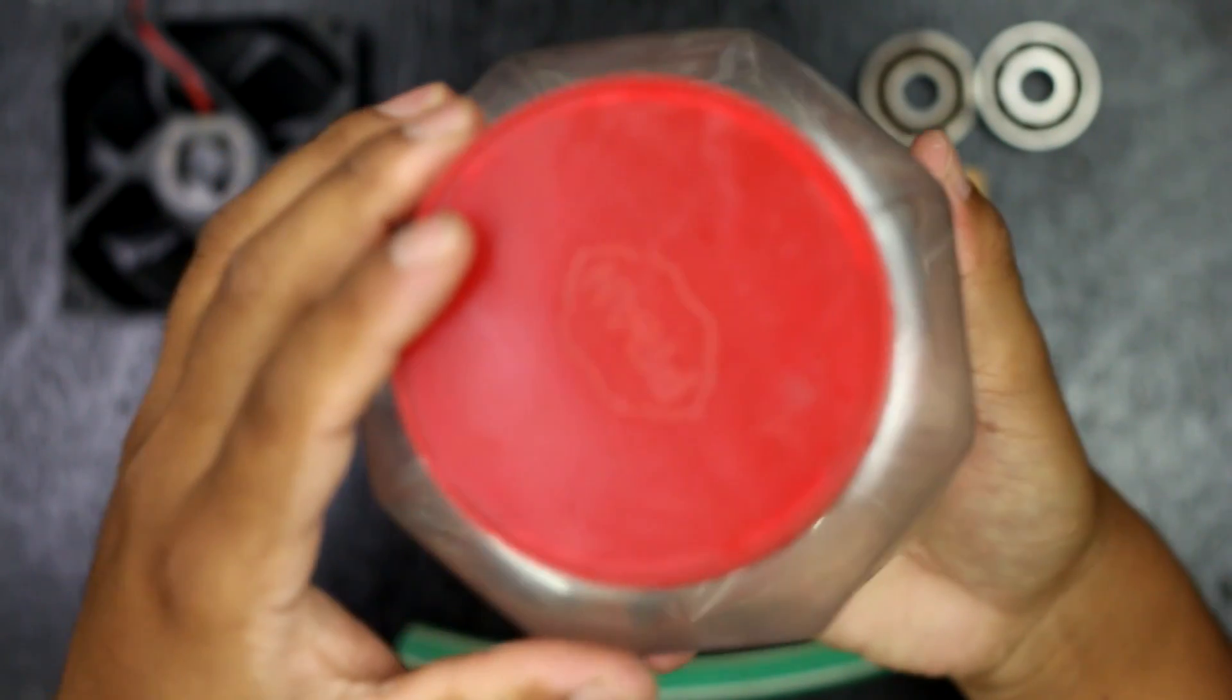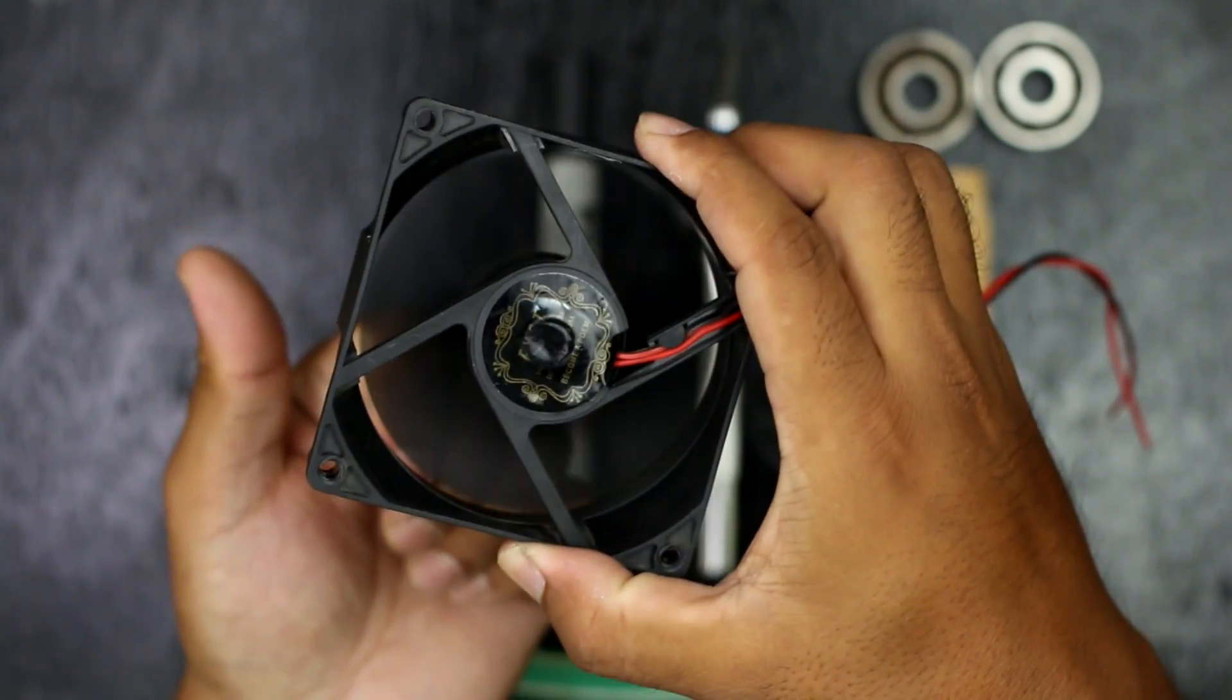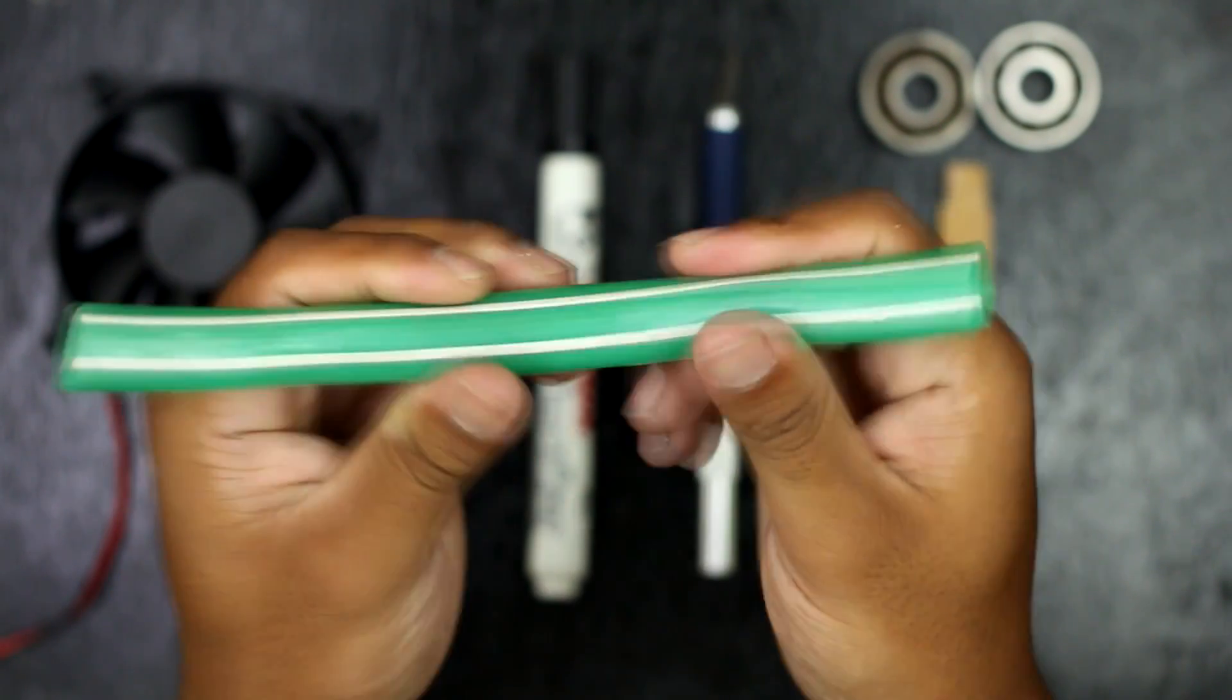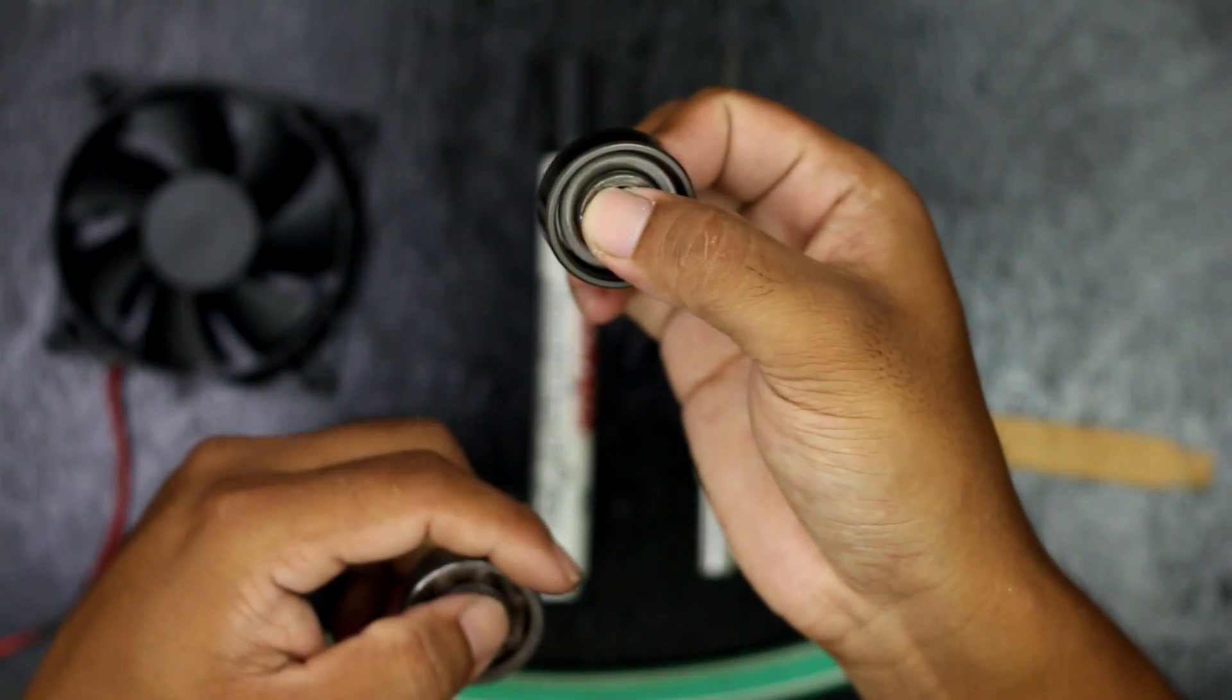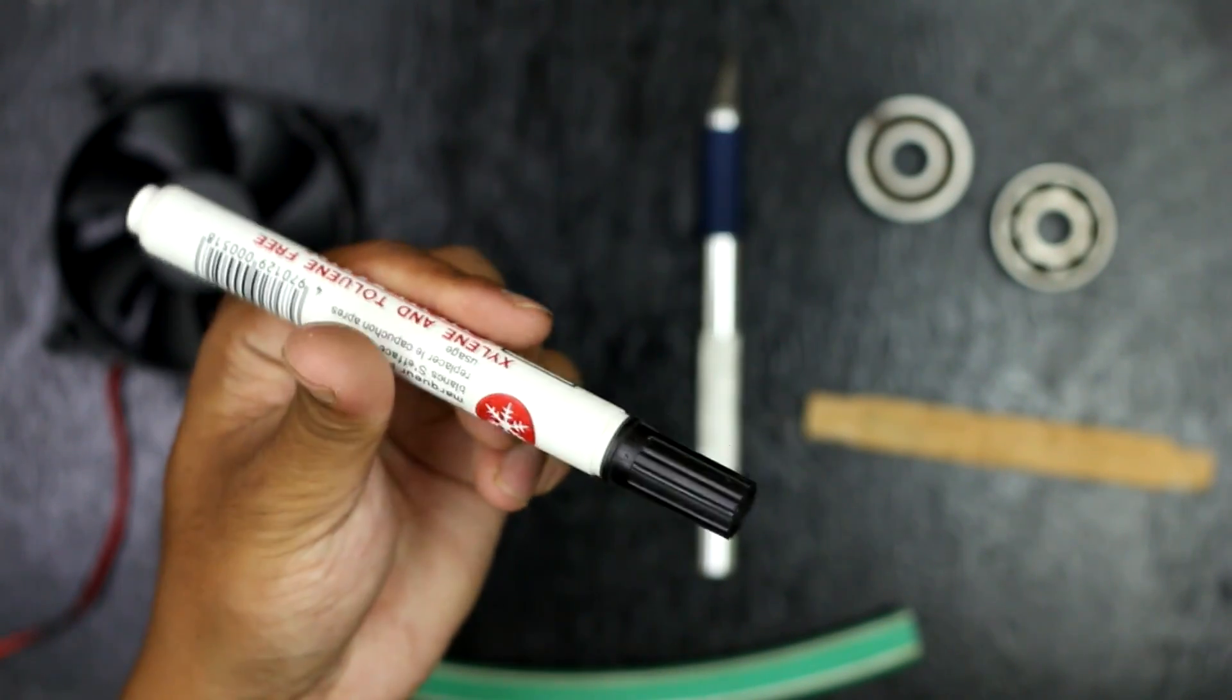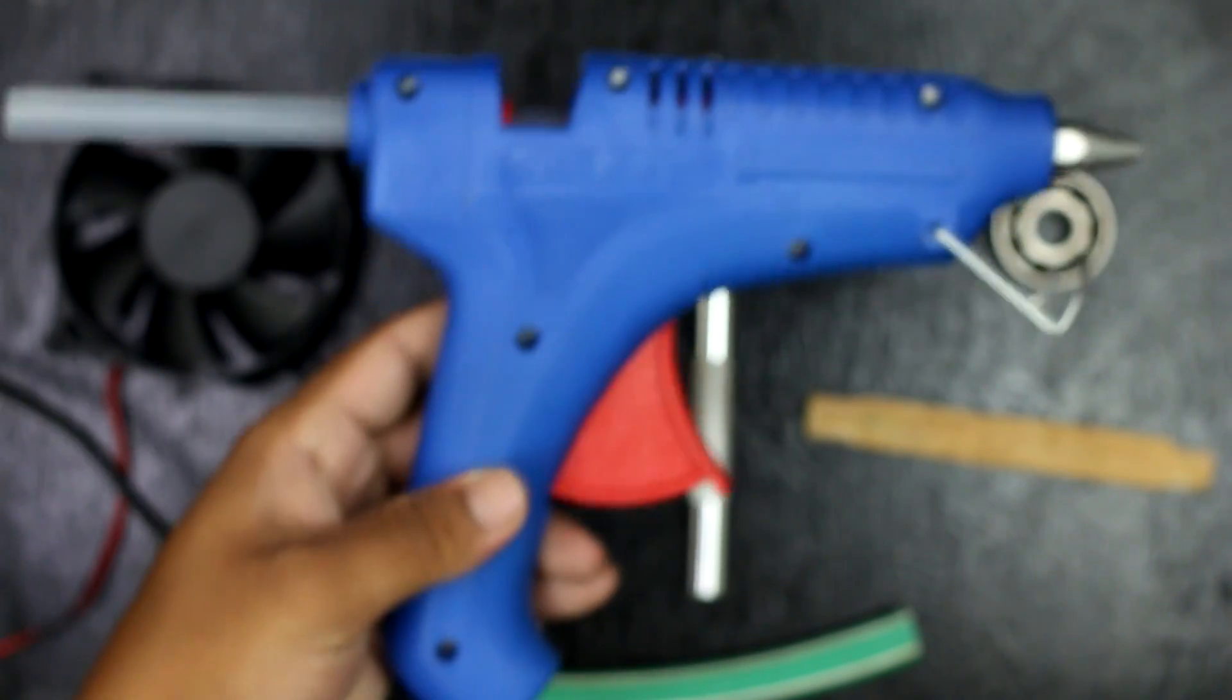Materials I have used in this DIY project are plastic jar, used CPU fan, piece of water pipe, a wooden block, two bearings, a marker, exacto knife and a hot melting glue.